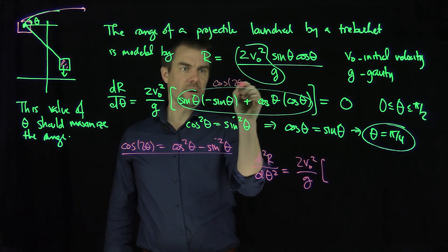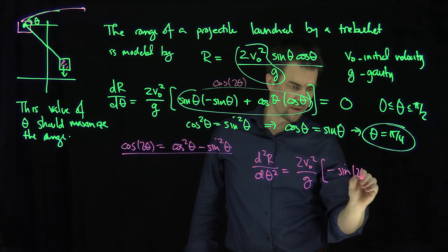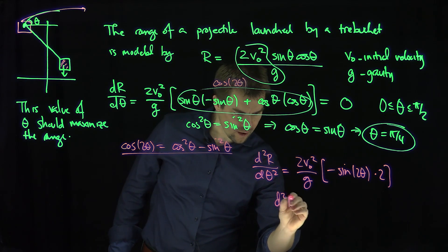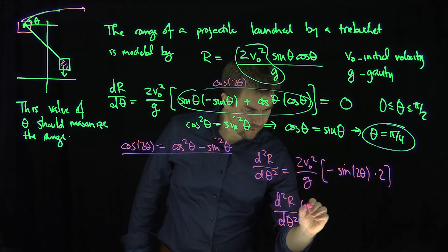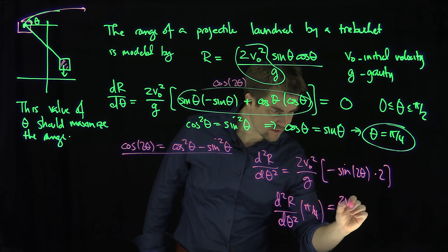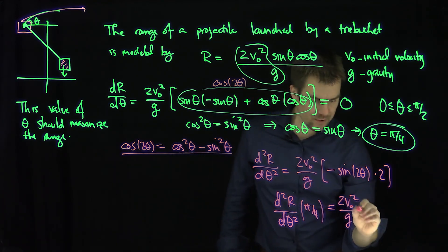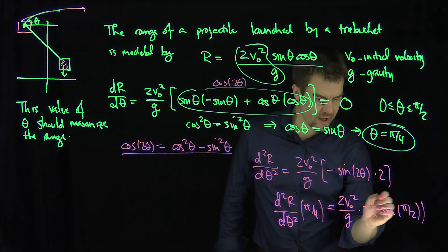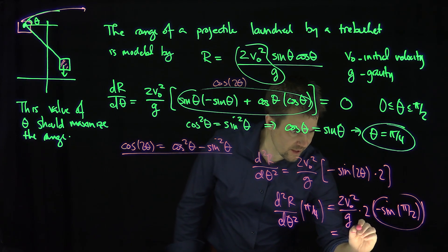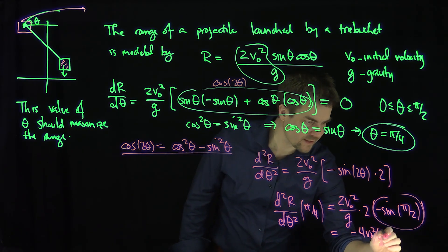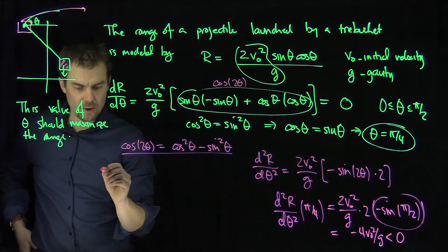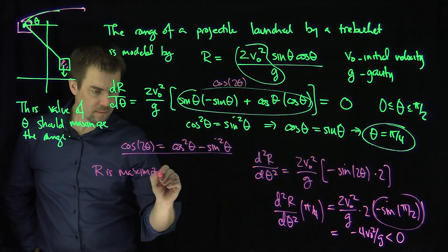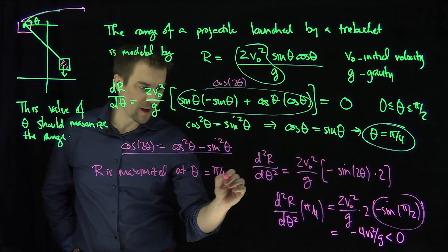d²r/dθ² equals 2v₀²/g times the derivative of cosine of 2θ, which is negative sine of 2θ times 2. Evaluating at θ = π/4: d²r/dθ² at π/4 equals (2v₀²/g) times 2 times negative sine of π/2, and sine of π/2 equals 1, so this equals negative 4v₀²/g, which is less than zero. The second derivative test confirms that θ = π/4 is the maximum. So r is maximized at theta equals π/4.